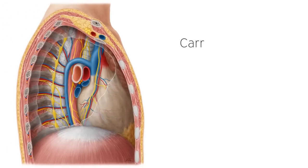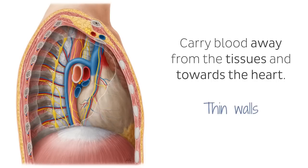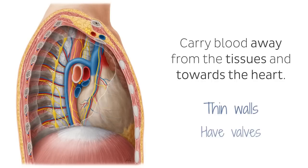Veins carry blood away from the tissues and towards the heart, and have thin walls. Their internal lumen is larger than that of the arteries due to the fact that they contain blood under low pressure. They also have valves that prevent the blood from flowing backwards.